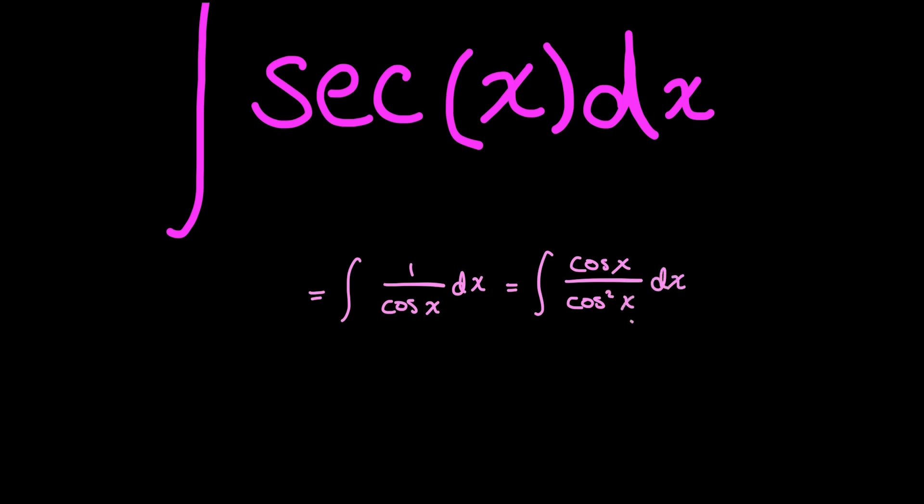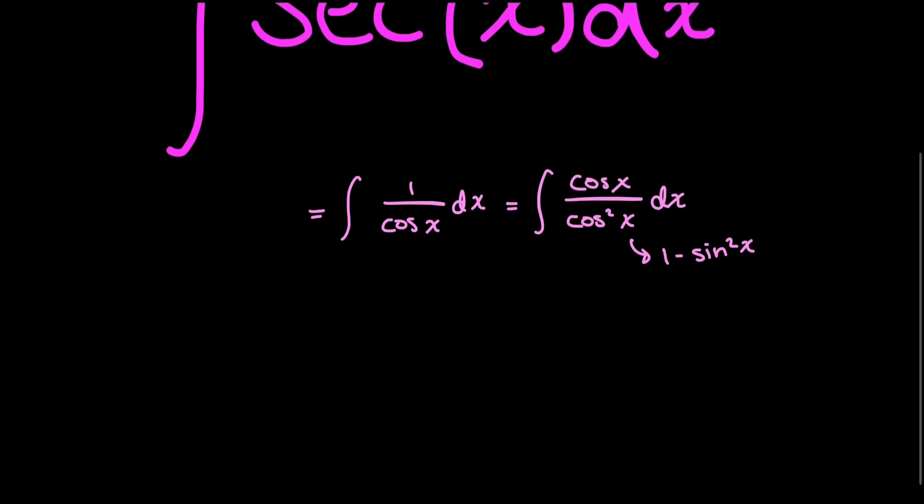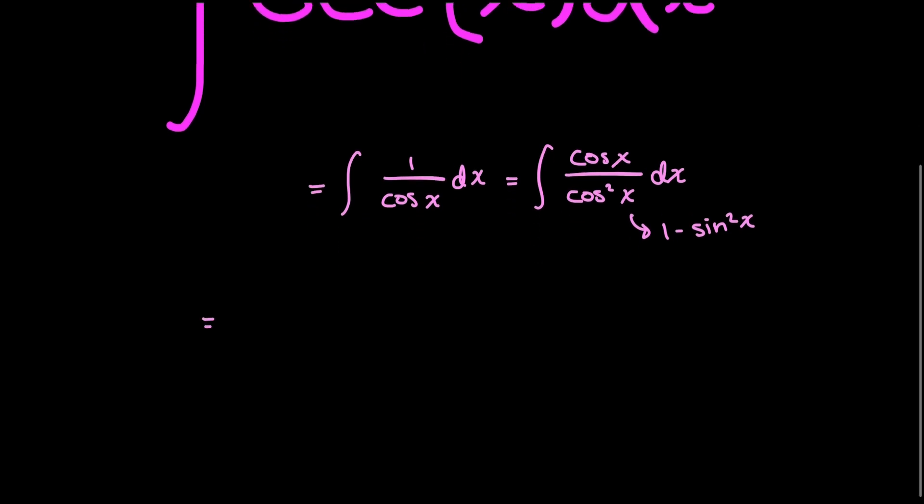And now looking at my denominator, my cosine squared x, I know I can rewrite this as 1 minus sine squared x using my trig identities. And so my integral now becomes cosine x over 1 minus sine squared x dx.